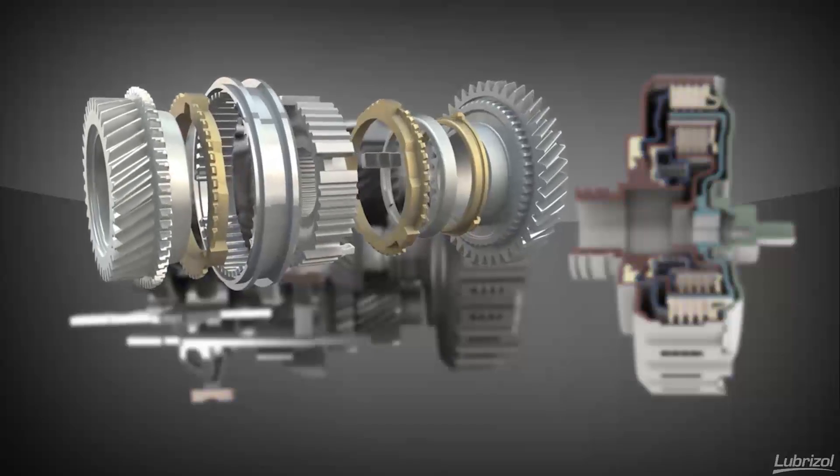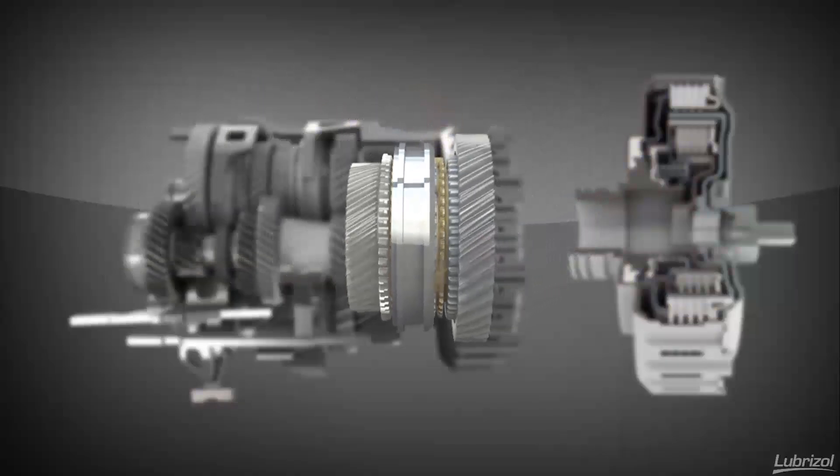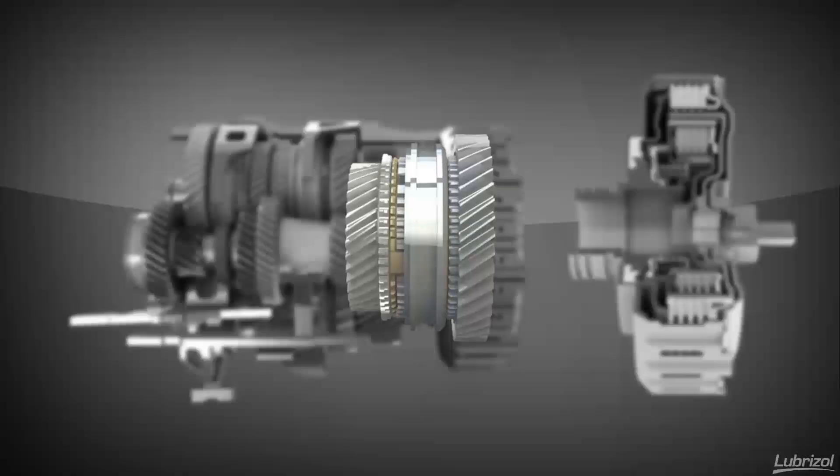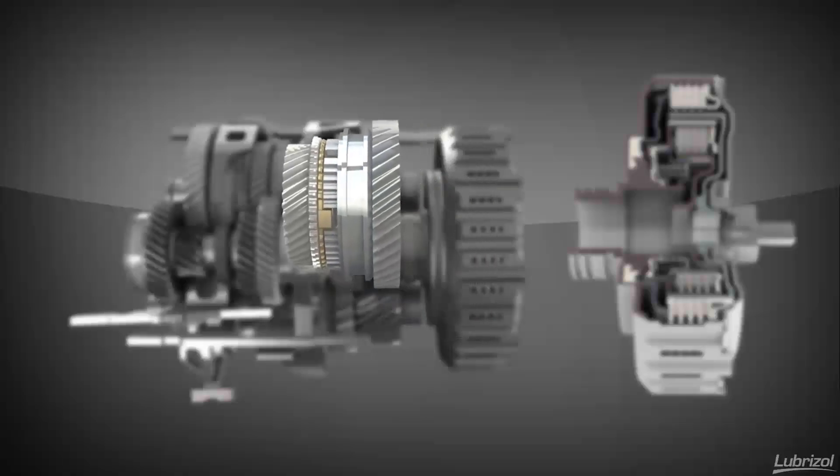The cone of the gear makes contact with the collar before the gear teeth mesh. The friction between the cone and collar brings the two to the same speed prior to teeth engagement. This creates smooth gear changing.